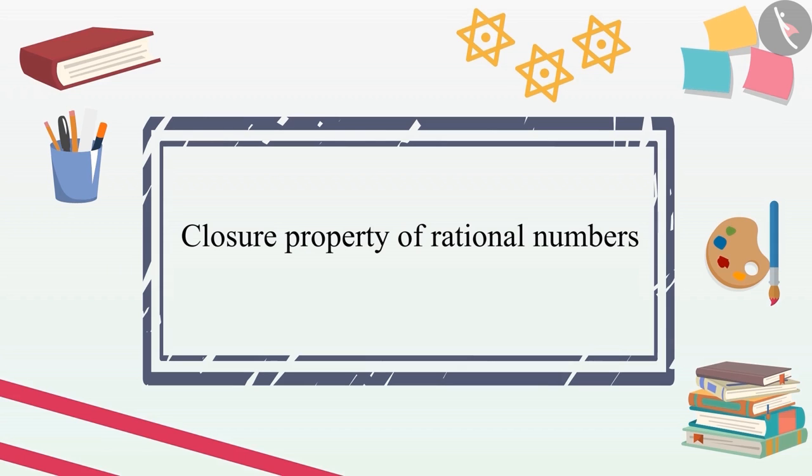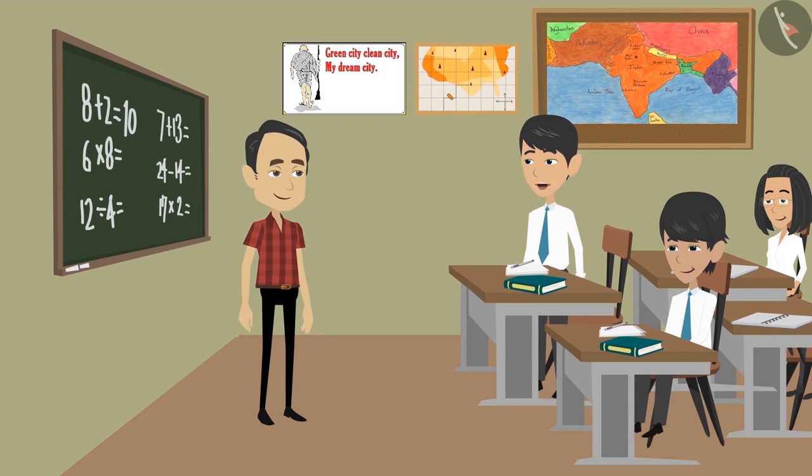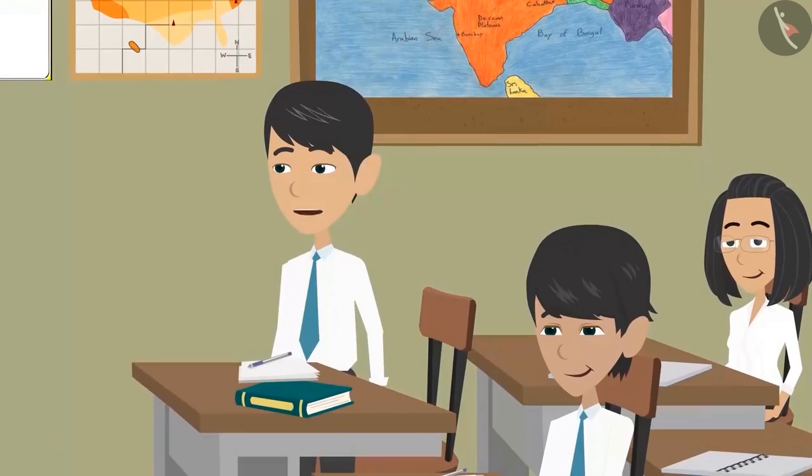Children, you must have read about numbers in previous classes. Now let us revise this once. Children, what are natural numbers? Sir, the numbers which we can count are called natural numbers, like we have one, two, three, four, and five fingers in one hand. Well done, Rahul.